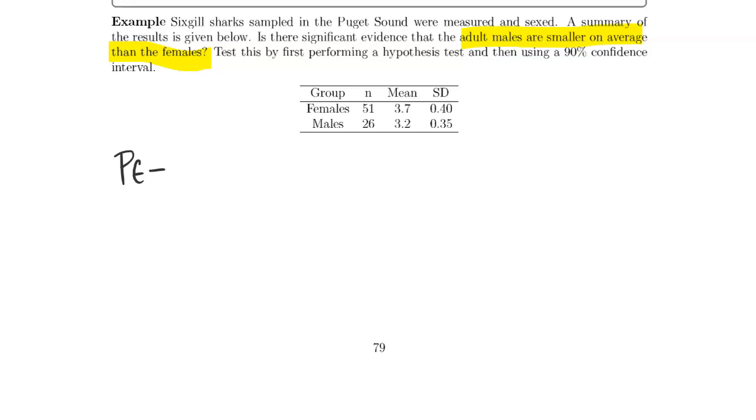In both approaches, we're going to want our point estimate, which is x1 bar minus x2 bar, reading the table from first row to second row. First row is females, second row is males. So the first row mean is 3.7 minus the second row mean is 3.2, and we get 0.5 as our point estimate.